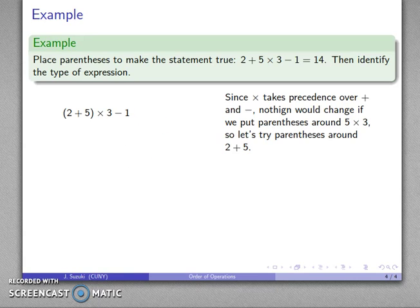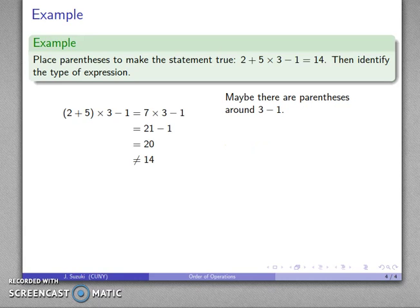So that's 2 plus 5 times 3 minus 1. Parentheses say do the stuff inside first. Multiplication and subtraction, multiplication gets done first, and then we do the subtraction, then we do the addition, still not what we want.